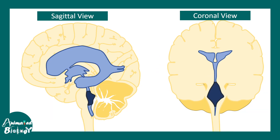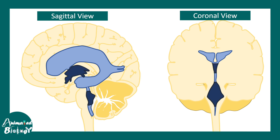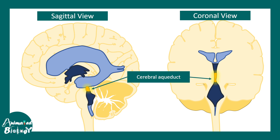Then comes the fourth ventricle. The fourth ventricle is situated adjacent to the cerebellum, and the fourth ventricle is connected to the third ventricle with the help of the cerebral aqueduct.